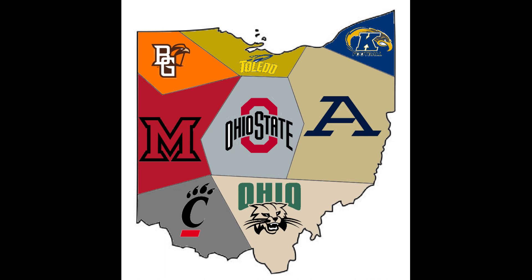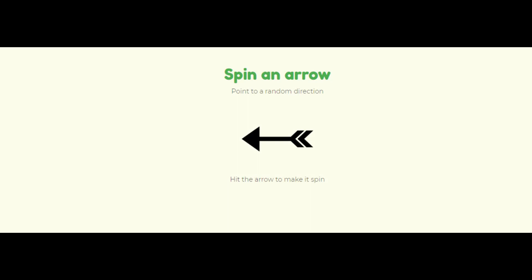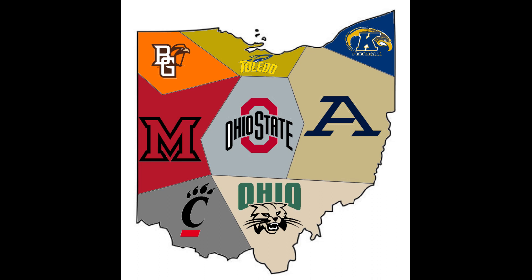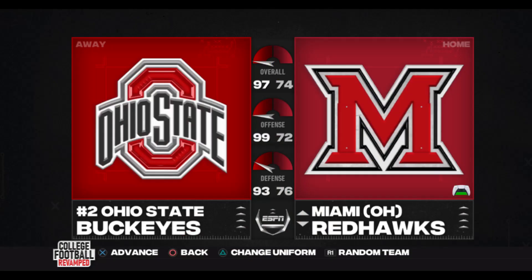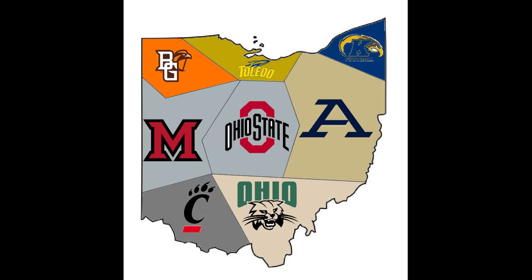We have a wheel with all of the collegiate football teams in Ohio to determine which one will be attacking. We also have an arrow wheel which will determine which way they will be attacking. For example, Ohio State was on the wheel and they were attacking to the west, meaning Ohio State is the attacking team and Miami of Ohio will be the defending team. If the attacking team wins, also known as the away team, they will take over the territory of the home team, and that home team will be eliminated.